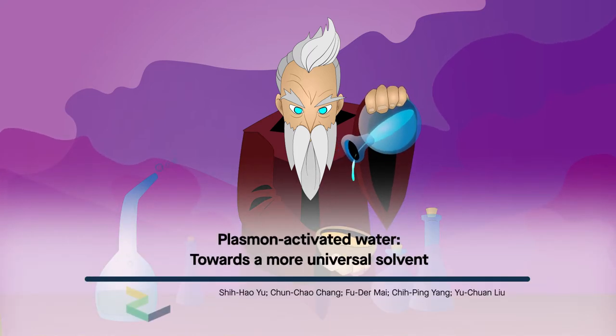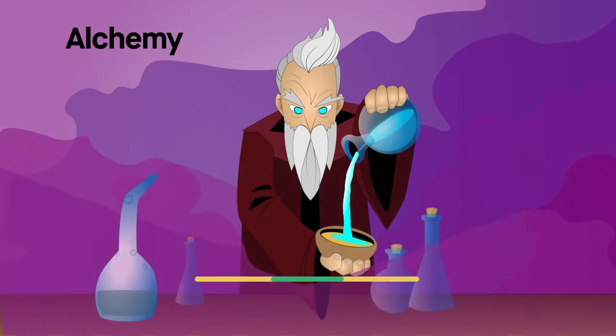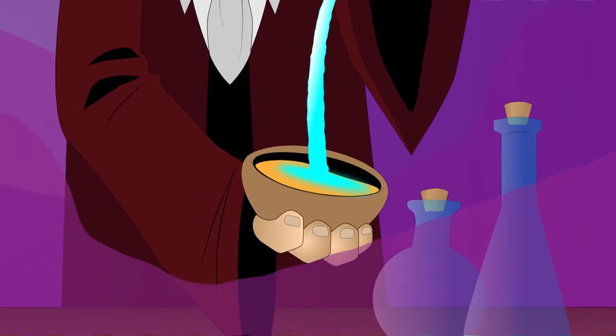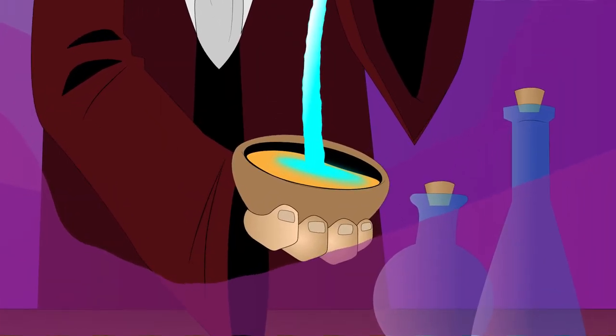During the Renaissance, practitioners of the dubious chemical art of alchemy spoke of a substance capable of dissolving any other substance. Given the name alkahest, this fabled universal solvent could, among other things, purify agents of disease to heal the body.